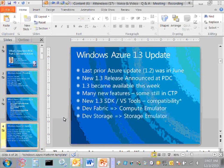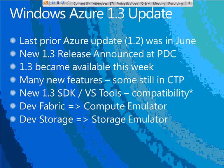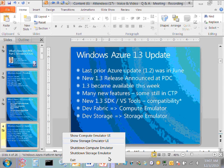A couple more things about the 1.3 SDK: there's some renaming going on. The cloud simulator you run on your desktop — previously called dev fabric and dev storage — has now been renamed to the compute emulator and the storage emulator. You can see in the system tray the blue Windows Azure icon; right-clicking now shows compute emulator and storage emulator. No difference in how they work — just different names.